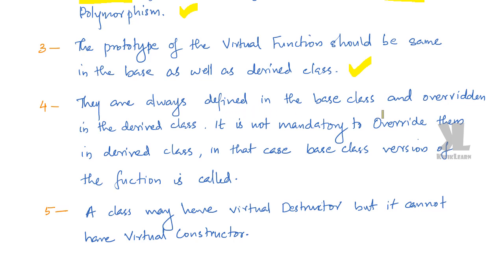The fourth rule is they are always defined in the base class and overridden in the derived class. However, it is not mandatory to override them in the derived class. If we don't override it, then in that case the base class version of the function is called.